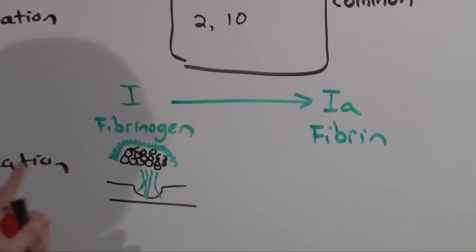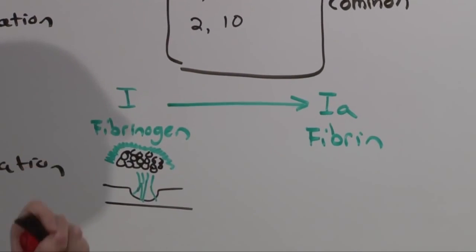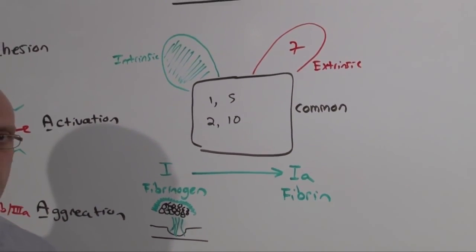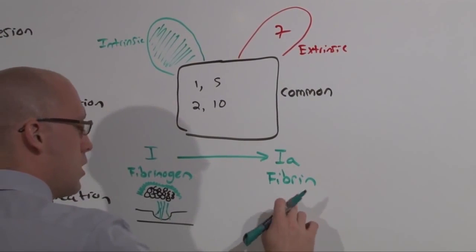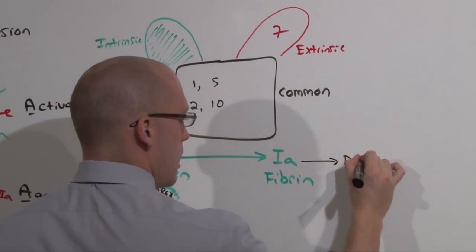That's what bleeding is all about. Primary hemostasis is about platelets building a platelet plug. Secondary hemostasis is using that platelet plug to build a fibrin clot. Now the body is not stupid. You can't just be building clots everywhere. So it knows to break down the fibrin clots into D-dimers.